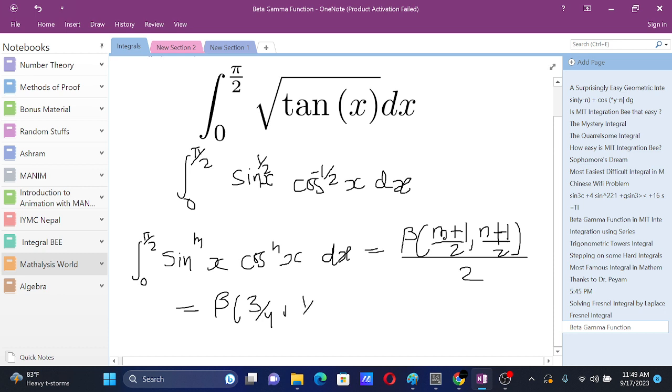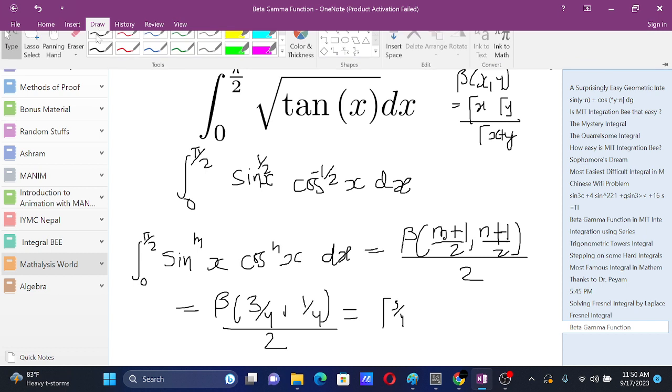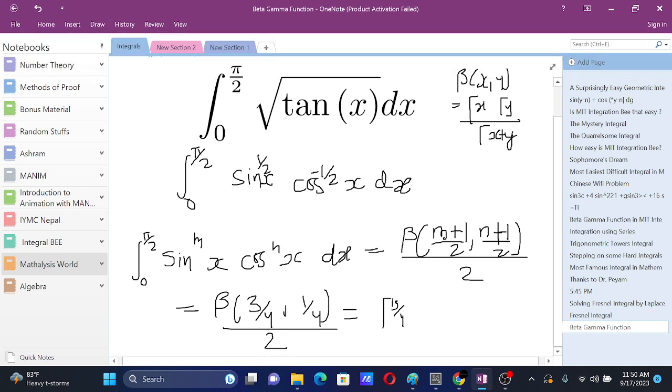Now we know that beta(x, y) is gamma(x)gamma(y) over gamma(x+y). Thus we have gamma(3/4) gamma(1/4) over 2 times gamma(1). Gamma(1) is 1.